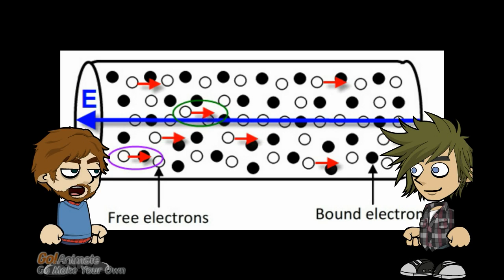To determine the current, we need to determine how much charge moves past some point in the wire. Let's add a line to show this point. The orange line is our reference for counting electrons that go by.